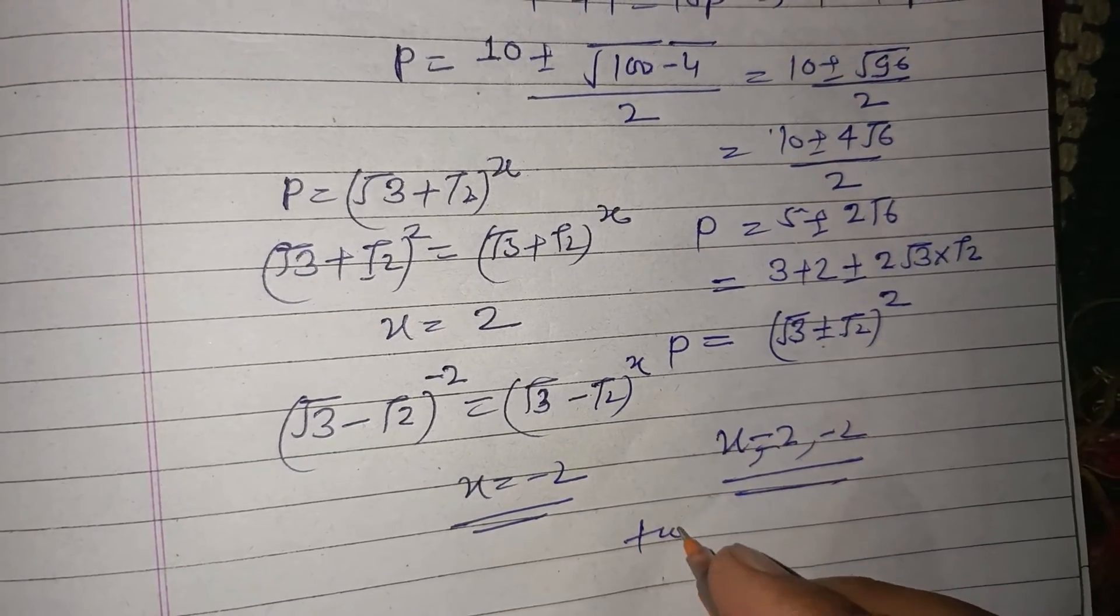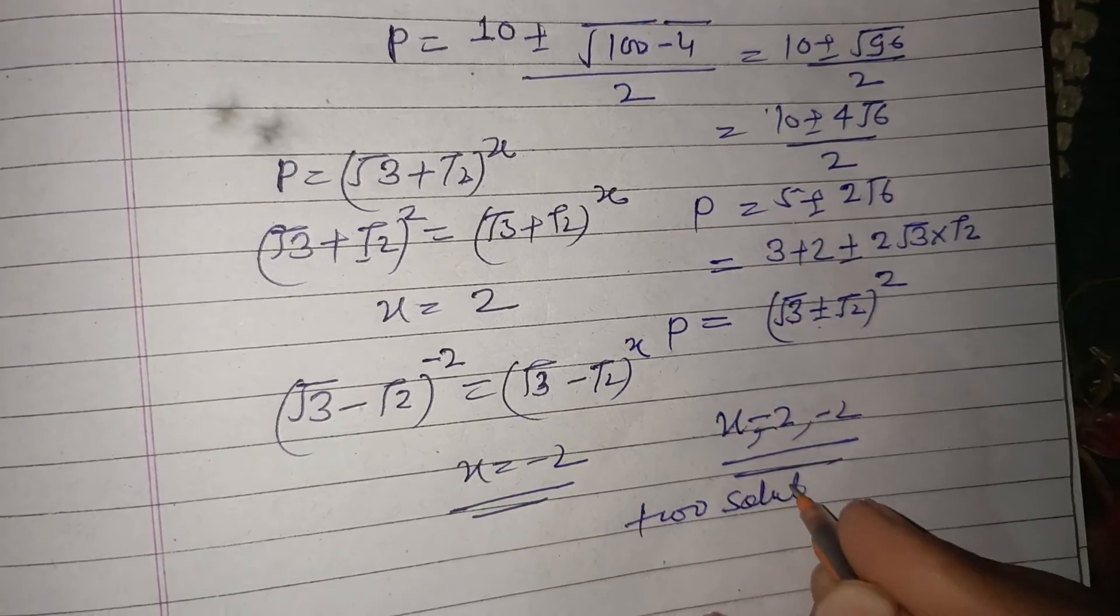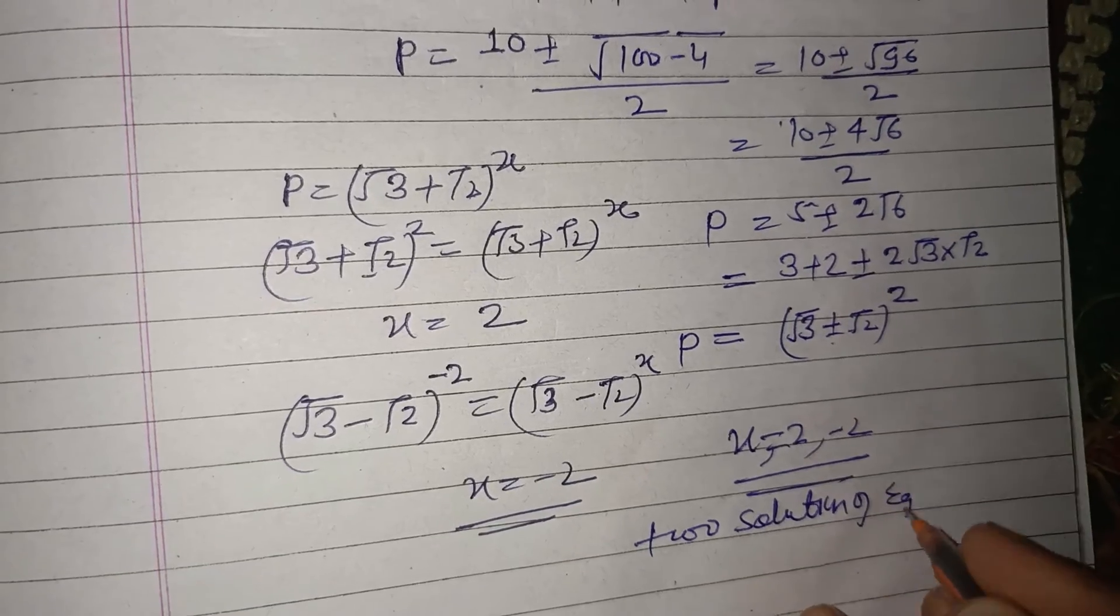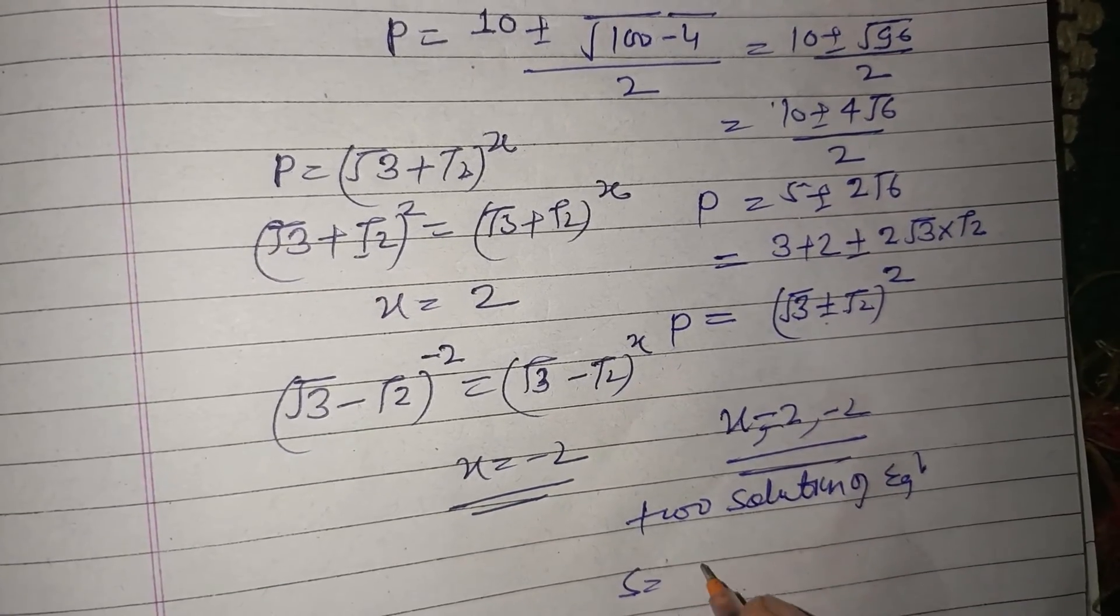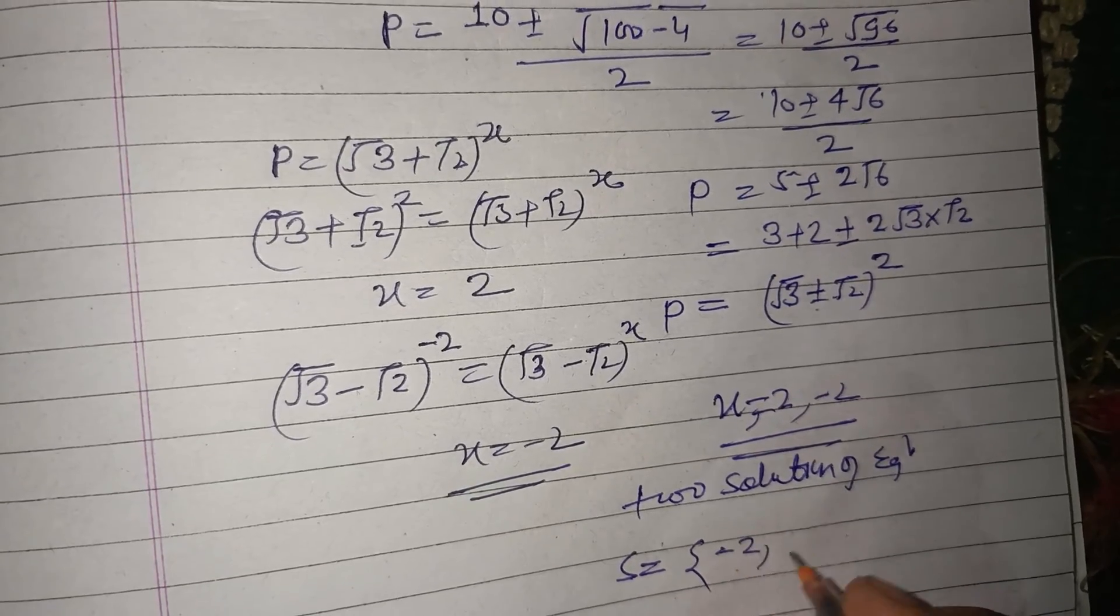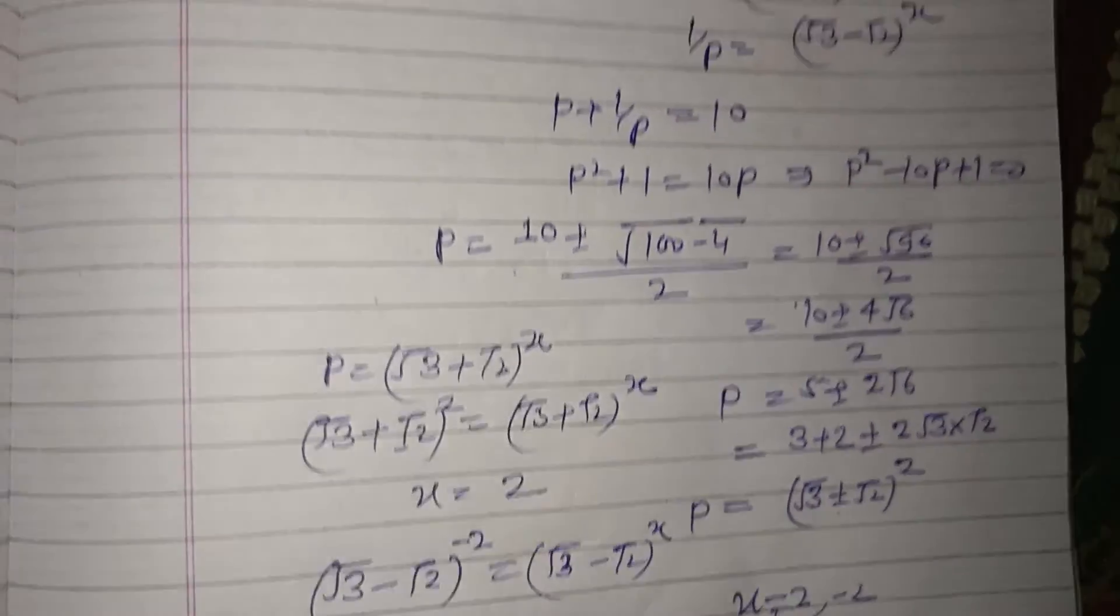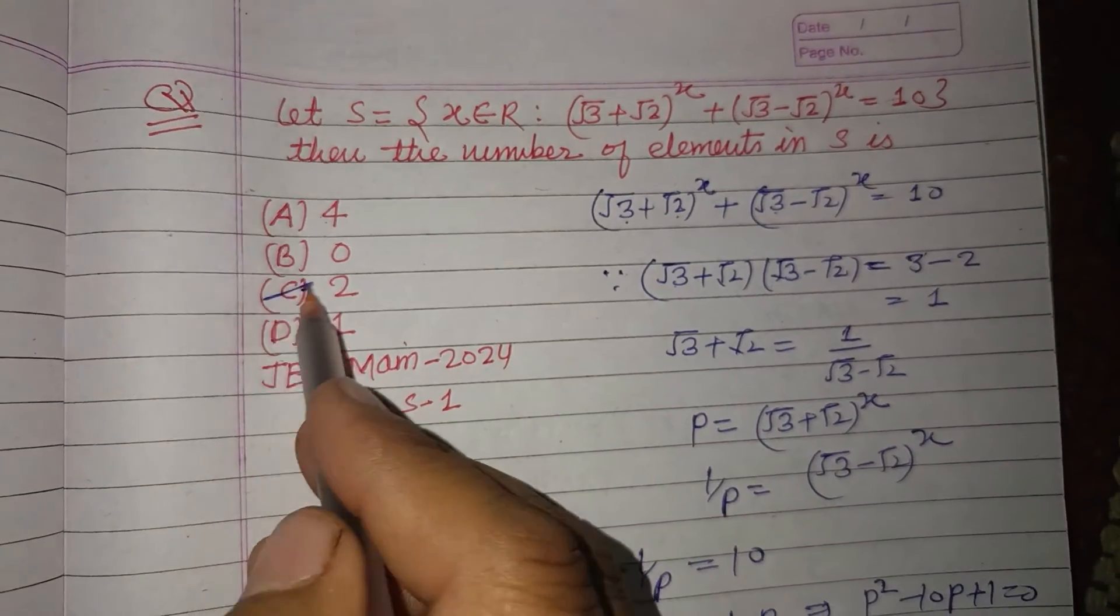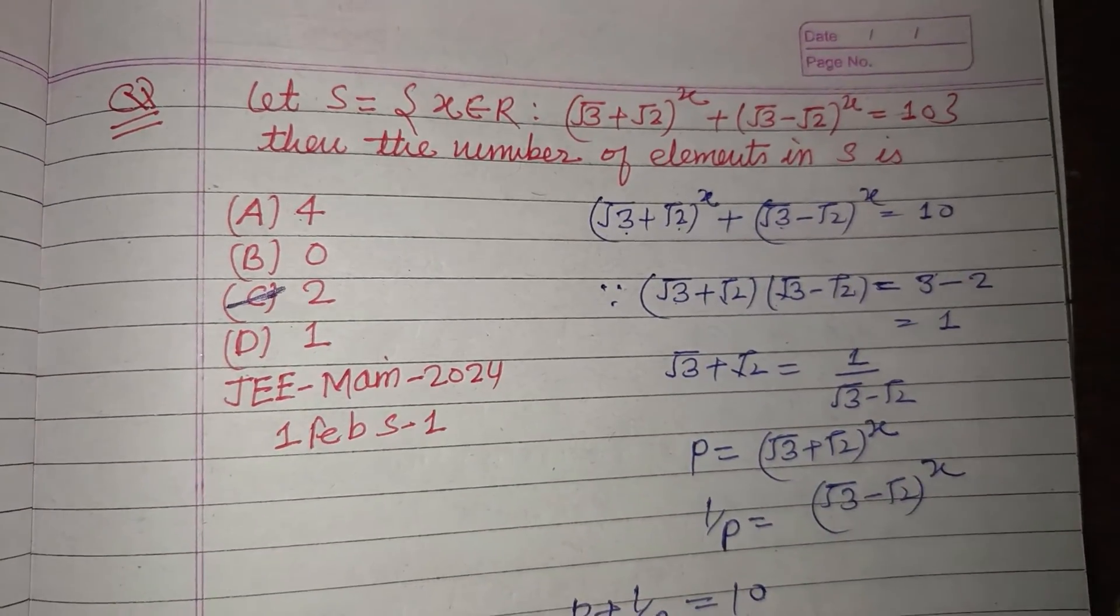So there are two solutions to the equation. Set S has two elements: -2 and 2. Two elements are found in this set, which is given in option C. Option C is correct.